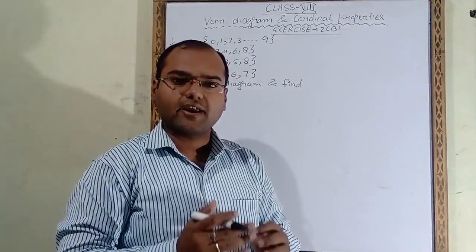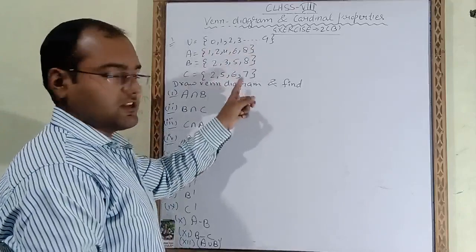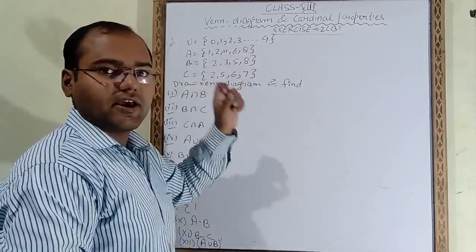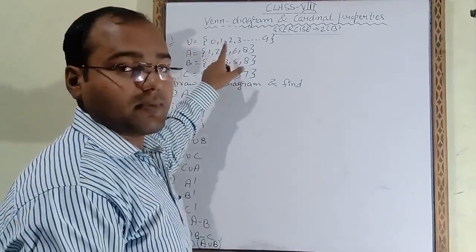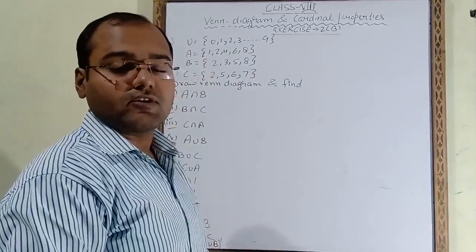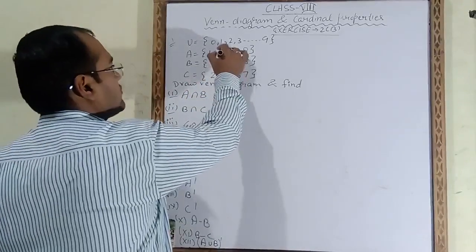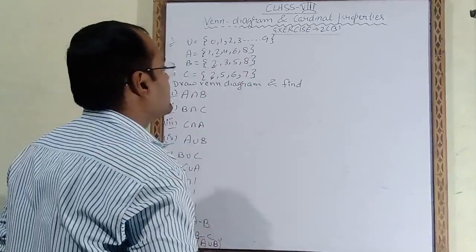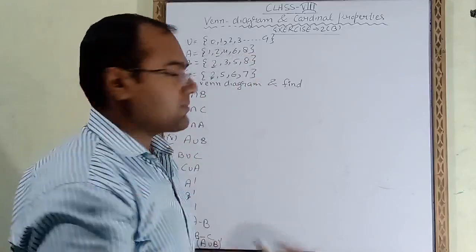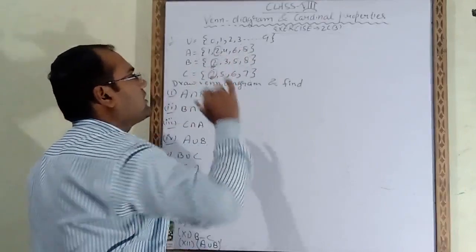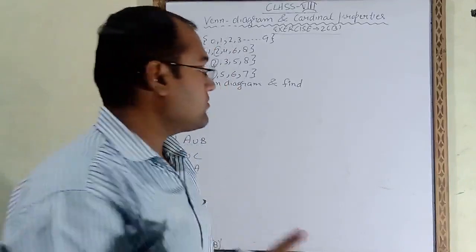Now let's solve a question. Universal set is given and sets A, B, C are given. To draw the Venn diagram, the first and most important step is to check which element is common in all three sets A, B, and C. We observe that 2 is common in all three. No other element is common in all three sets. So we will draw three overlapping circles.